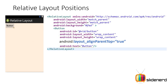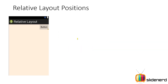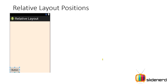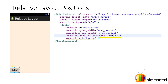When alignParentTop is true, the top edge of the button and the top edge of the relative layout are stuck with each other like glue. As I said, your relative layout is like chewing gum — you just stick your controls from edges or from the centers. Now if you notice the button is on the right side. I said layout alignParentRight equals true, meaning the right edge of the button is stuck with the right edge of the relative layout. And there is one more: when alignParentBottom equals true, the bottom edge of the button and the bottom edge of the relative layout are stuck with each other.